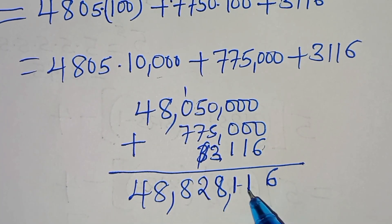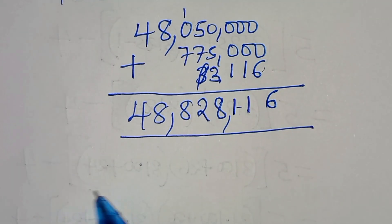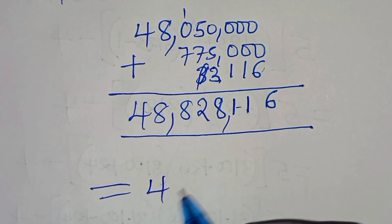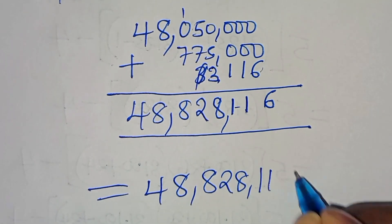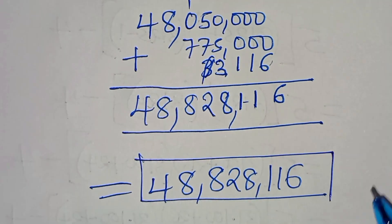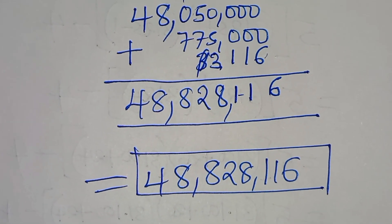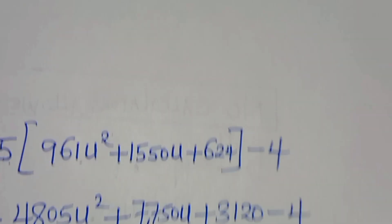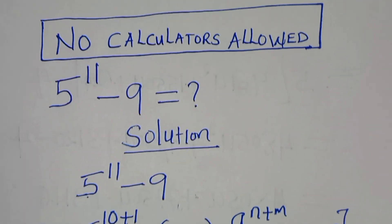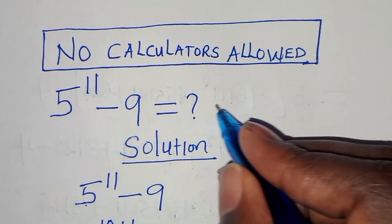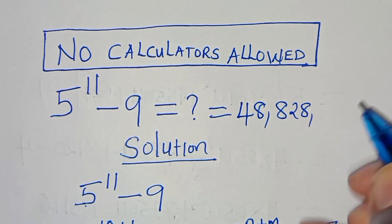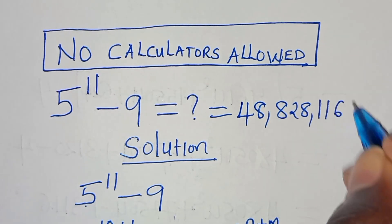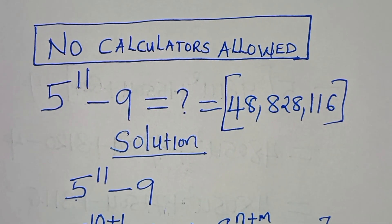Adding these together: 48,050,000 + 775,000 + 3116 = 48,828,116. So the solution to this math problem is 48,828,116. Thank you for watching — please like this video and subscribe; see you in the next video.